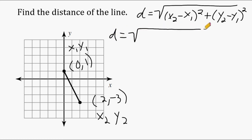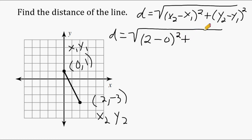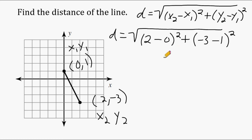Now all we have to do is take each corresponding value and plug it into our formula. So the value of x2 is 2, so we're going to start by replacing x2 with 2. And we're going to subtract from that x1, which is 0. We have to take that difference and square it. Then we're going to bring down our plus sign. Now y2 is negative 3, and we're going to subtract from negative 3 our y1, which is positive 1. We have to square the difference of those values as well.